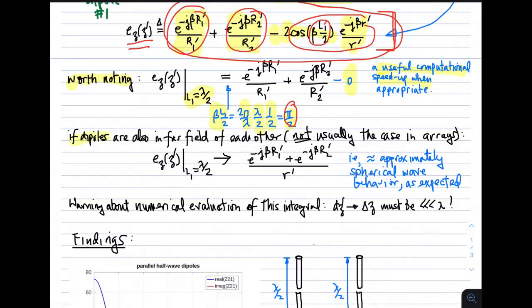It's also worth noting that if the dipoles are in the far field of each other, which is not usually the case in arrays, but you might consider this anyways to see how the expression's working. Then this factor E sub Z for a half-wavelength dipole reduces to this expression, which is a spherical wave dependence, at least in magnitude. Spherical wave in the phase dependence only approximately. The rays associated with R1 prime and R2 prime are approximately parallel, so this is pretty close to being a spherical wave. That's what we expect.